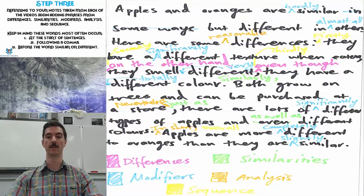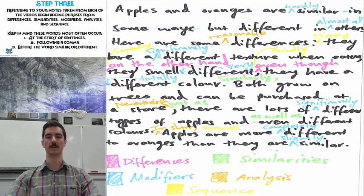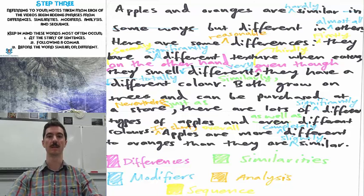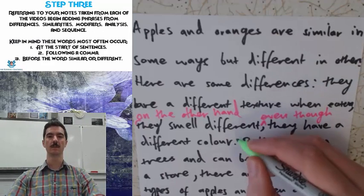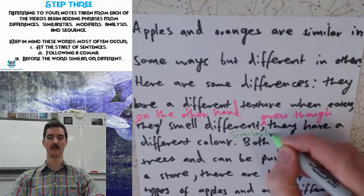I've added 'on the other hand' before 'they smell different,' and 'even though' before 'they have a different color.' This makes it flow together better, though to improve it honestly you'd probably want each of these three points to have its own sentence and be explained more fully. The addition reads: 'Here are some differences. They have a different texture when eaten. On the other hand, they smell different. Even though they have a different color.' You can see how that's improved the flow and the sequence of the sentence.